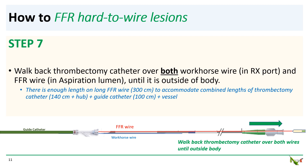Step seven: with the FFR wire and the workhorse wire now positioned beyond the lesion in the distal part of the vessel, you then carefully walk back the thrombectomy catheter over both wires until the thrombectomy catheter is completely outside the body. There is usually more than enough length on a 300-centimeter FFR wire to accommodate the combined lengths of the thrombectomy catheter, which is around 140 centimeters, the guide catheter, which is typically around 100 centimeters, and the vessel of interest.